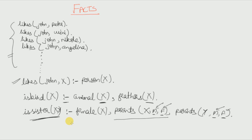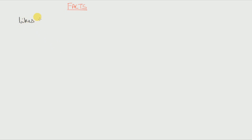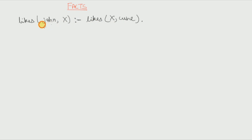Let's see more rules. Suppose we want to define that John likes X if X likes wine — meaning John likes anyone who likes wine. In Prolog we write: likes(john, X) :- likes(X, wine). So John likes X if X likes wine.